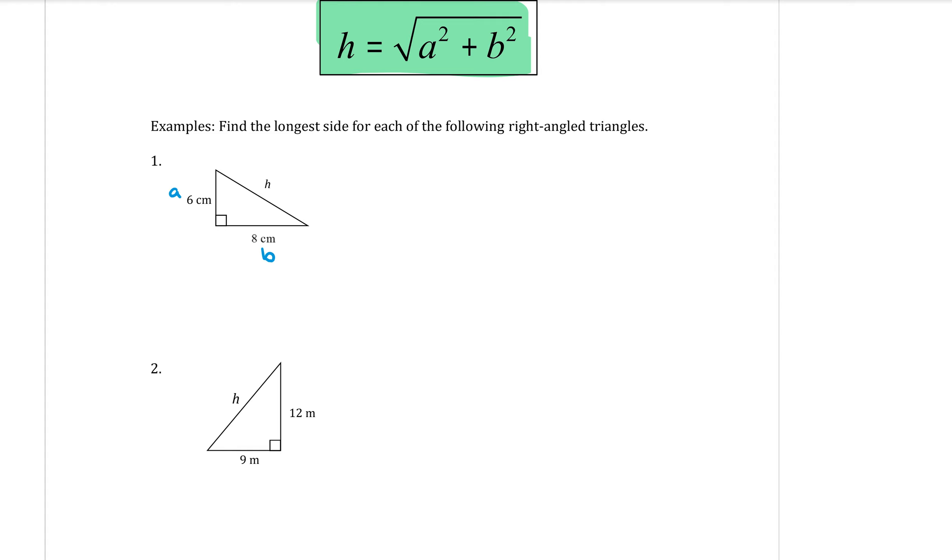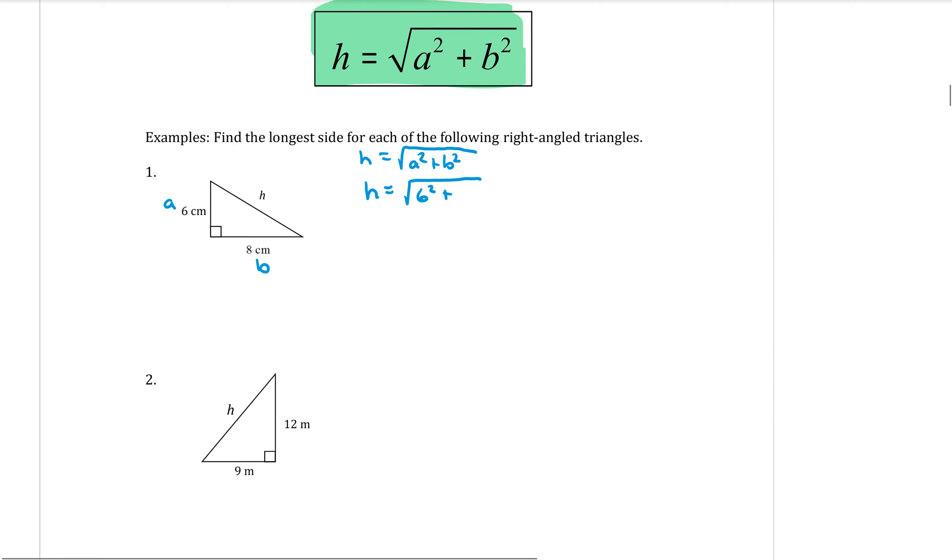Now, I'd like you to practice writing the formula down so that you can memorise it. So there's our formula. And all I have to do is substitute in that a is equal to 6. So I have a big square root sign, 6 squared plus, and then the other side is 8, so 8 squared.